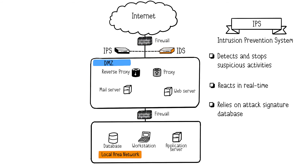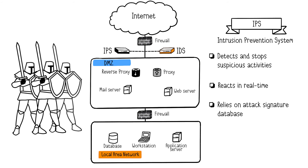Let's move on to the IPS, or Intrusion Prevention System. The IPS reacts in real time by stopping recognized suspicious traffic, including blocking ports. Essentially, the IPS is like an IDS but with blocking capabilities. The intrusion prevention system acts as the vigilant castle guard — when it identifies suspicious activity, it reacts in real time, securing the castle gates and blocking the invaders.